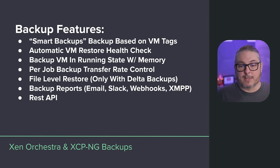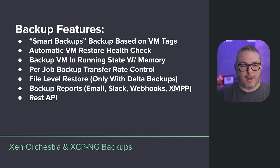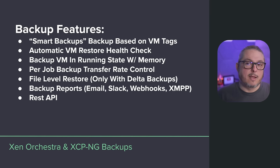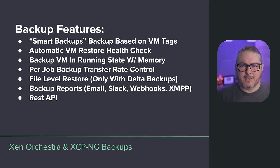You can also back up a VM in a running state with memory — useful not just for capturing an exact running state, but also for forensic snapshots with some advanced use cases. Per-job backup transfer rate control lets you rate-limit specific backup jobs for bandwidth management; the default is full speed. File-level restores are available with delta backups as well.